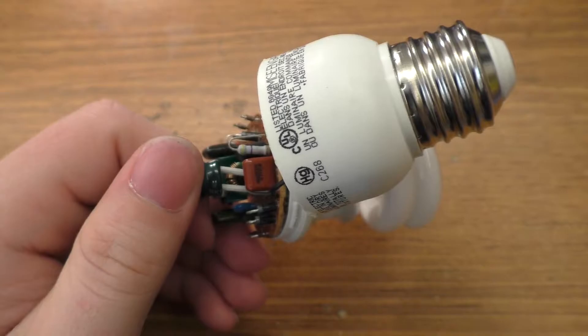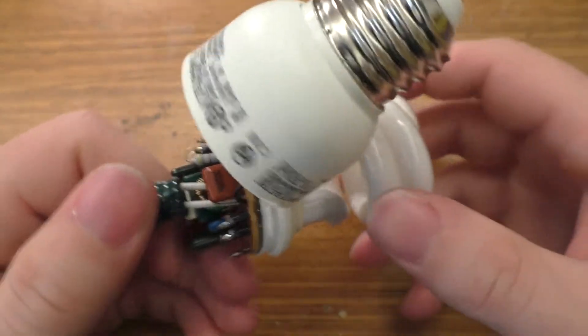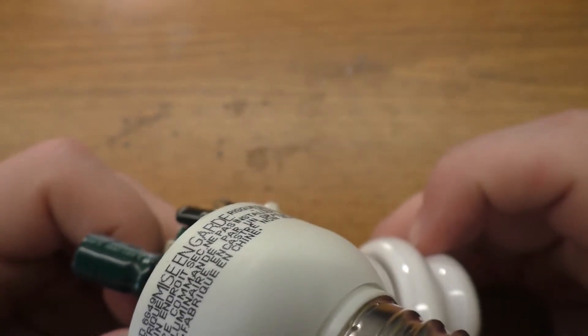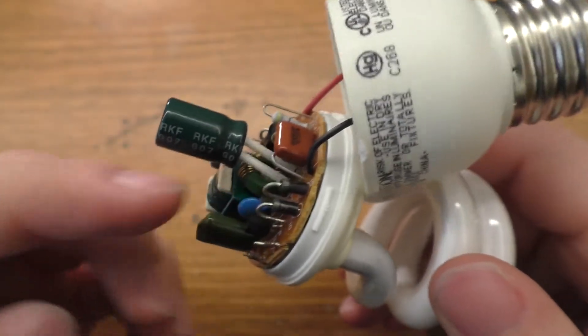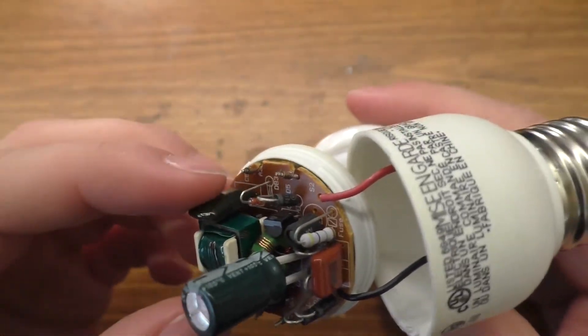Anyway, there's some other little capacitors probably always here for suppression and things like that. I presume that this is like a self oscillating circuit because there's only two active components.